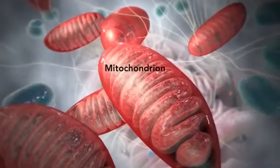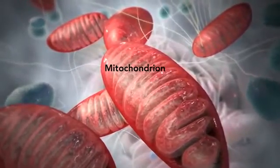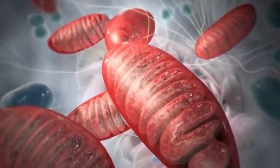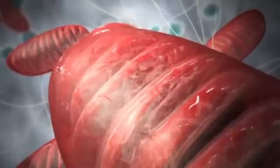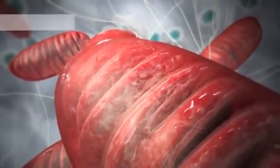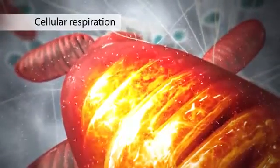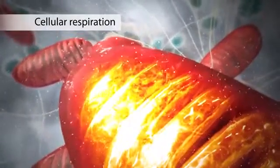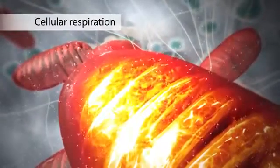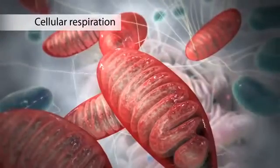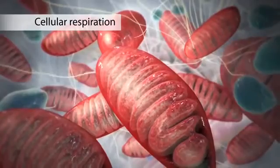The mitochondrion is an organelle that is the powerhouse for both animal and plant cells. During a process called cellular respiration, the mitochondria make ATP molecules that provide the energy for all of the cell's activities. Cells that need more energy have more mitochondria.